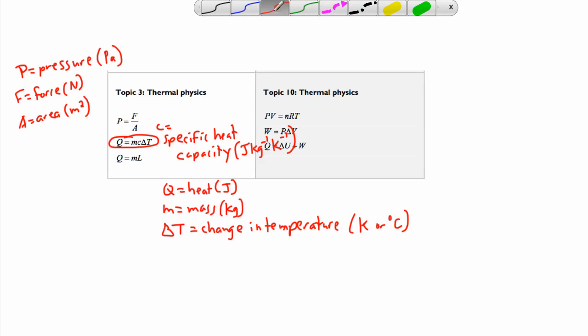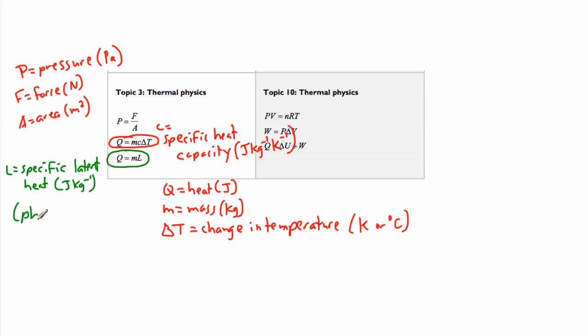Now, what if we have something else? This one, that is all about L, the specific latent heat. And what you do with this, this is all about a phase change. This would be measured in joules per kilogram, because Q over M would be L. So specific latent heat has to do with phase changes.